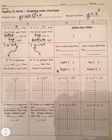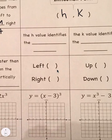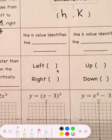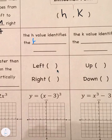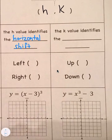Normally we'd talk about a vertex point, but with cubic functions we talk about our inflection point, and that is at (h, k). The h value identifies the horizontal shift — moving left and right. Because it starts with 'h' for horizontal, it should be easy to remember. The k value is our vertical shift — up and down.